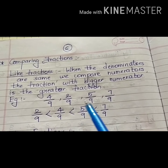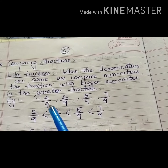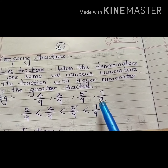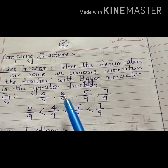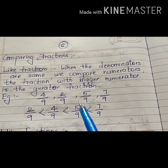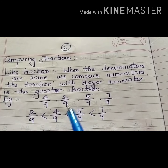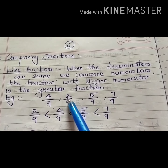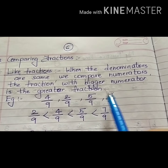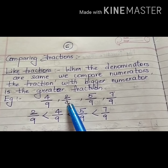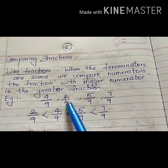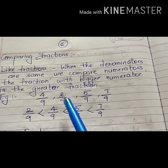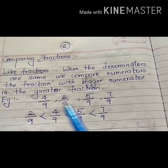When we have more than two fractions to compare, observe all the denominators. In this example, all the denominators are the same, so these are all like fractions. We compare the numerators just like normal numbers. 2 is the smallest, so the smallest fraction is 2 upon 9, then 4 upon 9, then 5 upon 9.